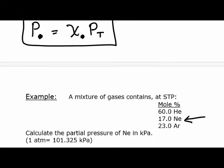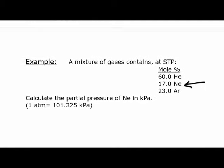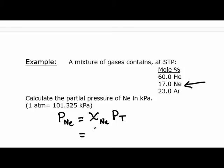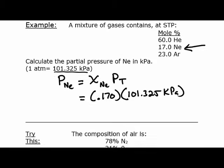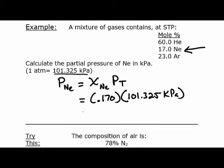Let's use the equation we just deduced for neon. The pressure for neon equals the mole fraction for neon times the total pressure. What is the mole fraction for neon? We have mole percent, and mole fraction is that number divided by 100, so 0.170. The total pressure at STP is 1 atmosphere, which is 101.325 kilopascals. When we do the math, we get 17.2 kilopascals as the partial pressure for neon.